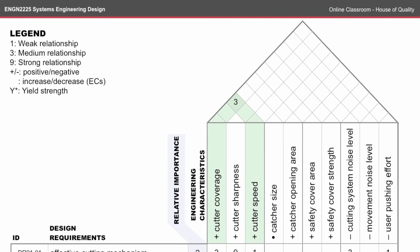Next we look at how the engineering characteristics trade off against each other — this is done at the top of the house, also called the roof. If your design doesn't exist yet, it might be difficult to understand whether these are correlations or trade-offs. For example, increasing cutter coverage and increasing cutter speed might actually be a trade-off in the final design — if using a traditional lawnmower blade, a larger area might make it harder to increase speed. Because I'm not sure what the design is yet, I've left this as a correlation that might change. Trade-offs are marked with a negative sign using the same 1 to 9 scale, where weak relationships have a 1 and strong relationships have a 9.